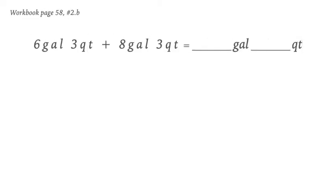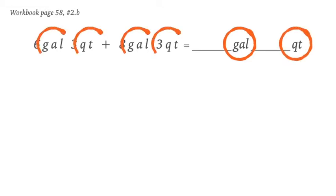Six gallons and three quarts plus eight gallons and three quarts equals... The first thing that we should look for is the units we are looking for, which are gallons and quarts. Since our equation has the same units, we don't have to convert anything and we can just continue solving the equation.